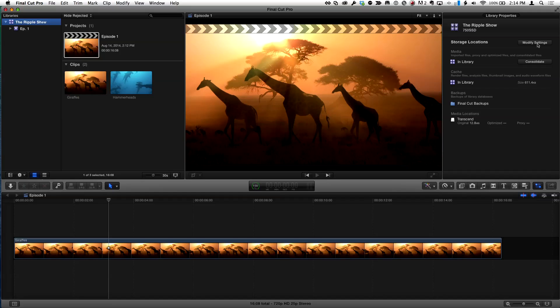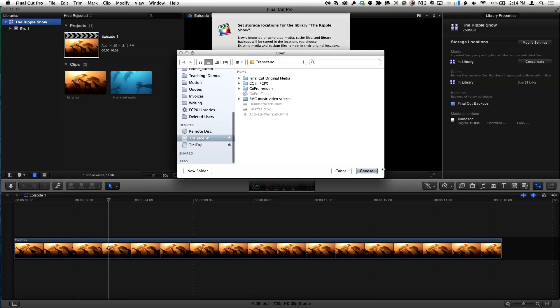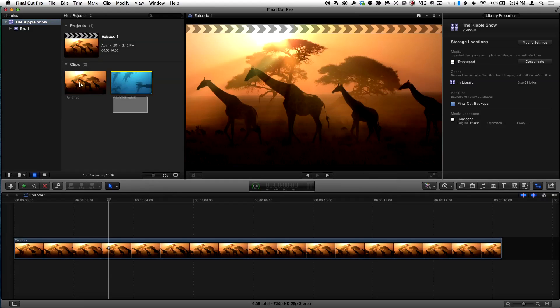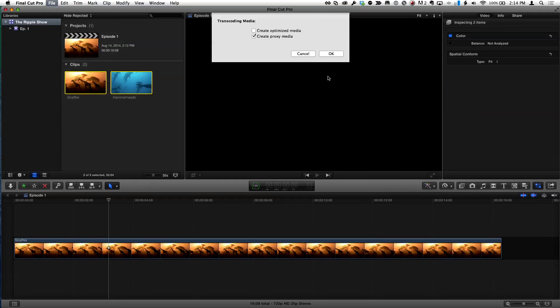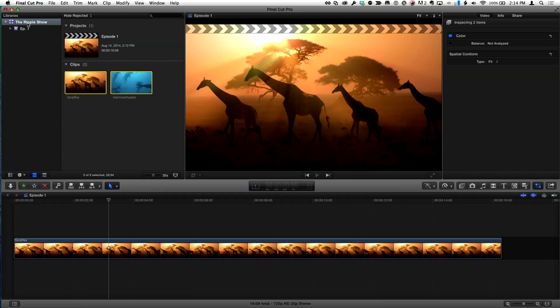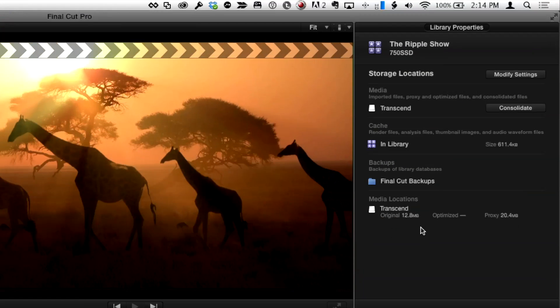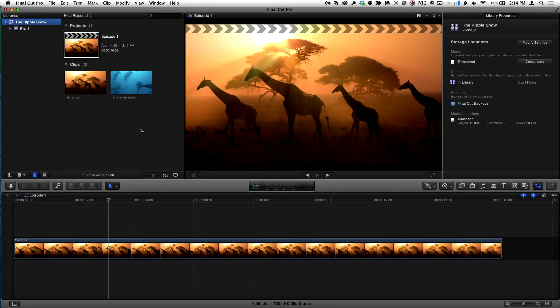What I'm going to do on this target drive is choose delete generated event files and delete the proxy media that I just created to get rid of it. So now we're back to a situation where we just have original media on that external drive. I'm also going to go back to modify settings and target that external drive so proxy and optimized would be generated there. I'm basically making the mistake of creating the proxy media in the same location as the original media, because this is really the question people have.